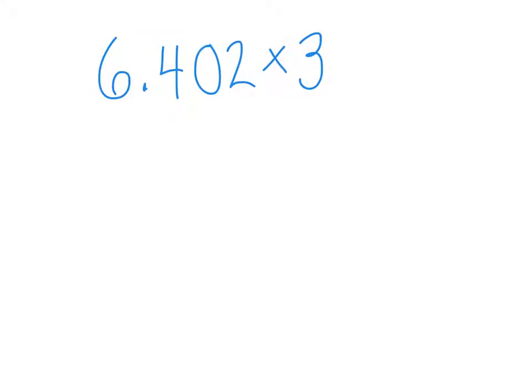Here I have another problem, 6 and 402 thousandths times 3. Again, it's written as an expression, which means we cannot solve it using the standard algorithm in this way. We have to write them vertically.